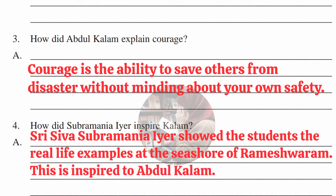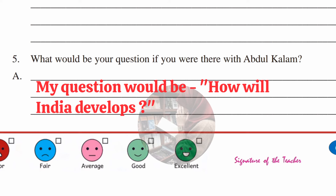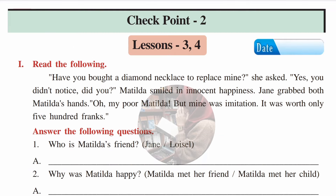Third question: how did Abdul Kalam explain courage? Answer: courage is the ability to save others from disasters without minding about your own safety. Fourth: how did Subramanyam Iyer inspire Kalam? Answer: Shri Siva Subramanyam Iyer showed students real life examples at the seashore of Rameshwaram — how birds fly — which inspired Abdul Kalam. Fifth: what would be your question if you were there with Abdul Kalam? Answer: my question would be — how will India develop?